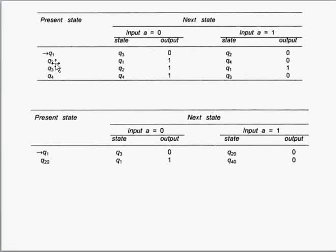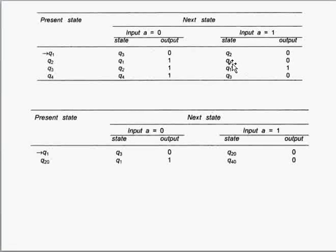Now if we apply 0 over q2 we are coming to q1. Looking at all occurrences of q1, in every case the output is 1 — q1/1 appears consistently — so we write q1 with output 1. If we apply 1 over q2 we are coming to q4 and the output is 0. But there is another occurrence of q4 where the output is 1, so we must split q4 into two states: q4_0 and q4_1. We write q4_0 with output 0.